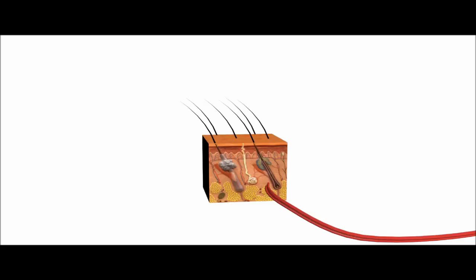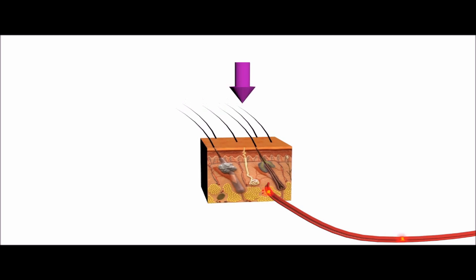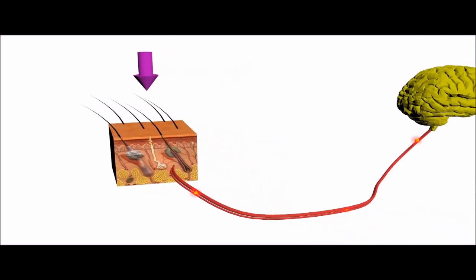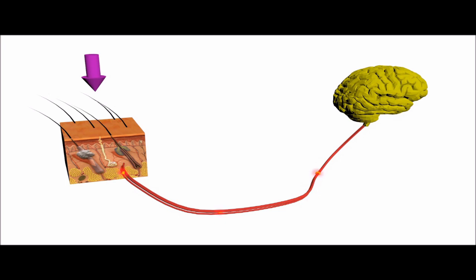Touch sensing in humans is accomplished using thousands of sensors called mechanoreceptors that are distributed in the skin. In response to pressure, the mechanoreceptor produces electrical pulses. The electrical pulses are transmitted to the brain where the signal is interpreted.